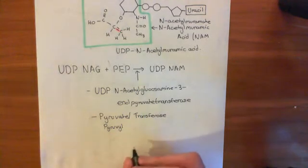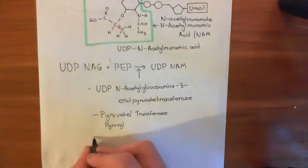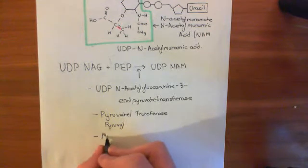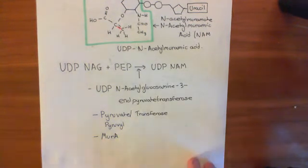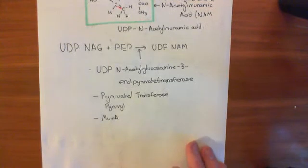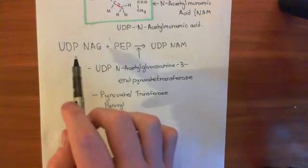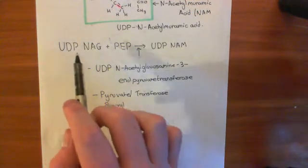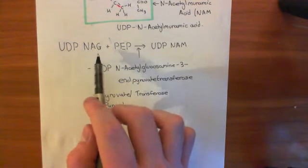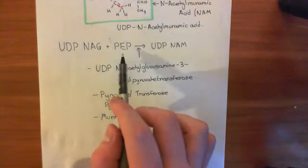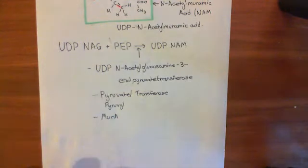The potentially most accessible name is MurA. All of these names refer to the enzyme which catalyzes this reaction, where you take a UDP-N-acetylglucosamine molecule and a phosphoenolpyruvate molecule and convert them into a UDP-N-acetylmuramic acid molecule.